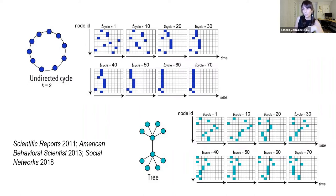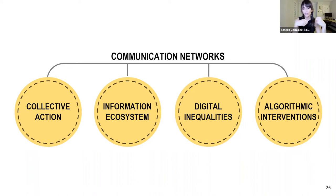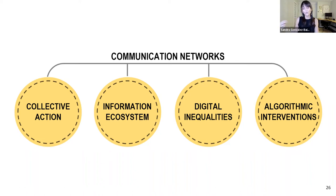The bigger picture is that my interest in communication networks stems from the role they play in several interrelated layers of our societies. The first is the organization of collective action — the ability to organize without organizations. The second is the information ecosystem: how networks shape our access to and use of political information, including misleading content. Communication networks also reinforce and create new forms of inequalities — in access to information and in representation — and they are allowing a new form of intervention that is not social or political but algorithmic, blurring the boundaries between the social and the technological in ways that have no precedent.